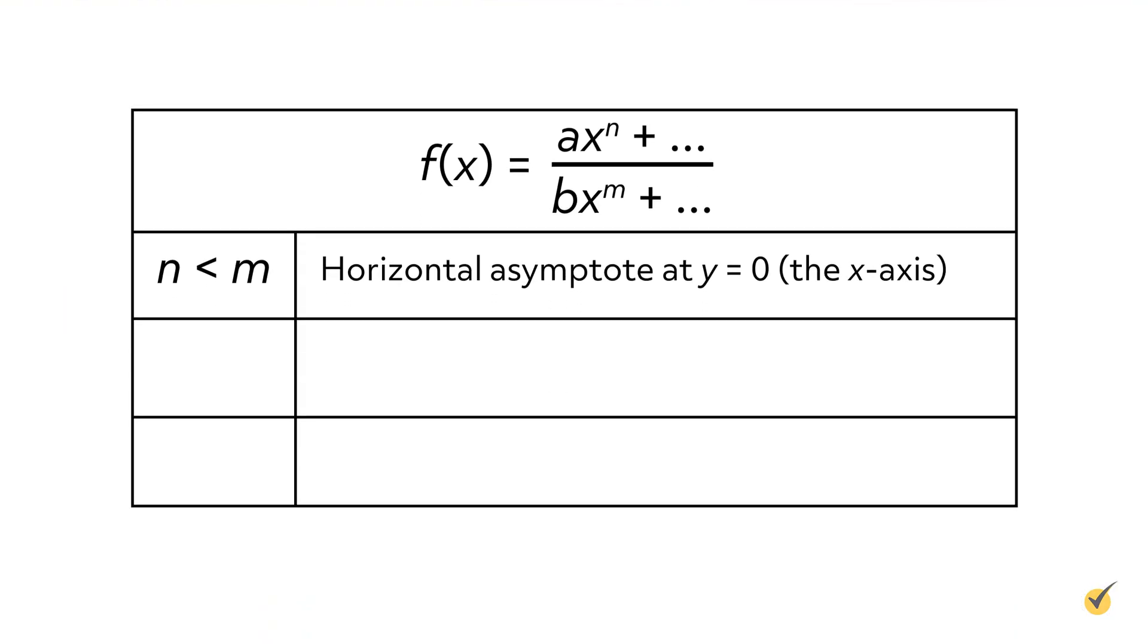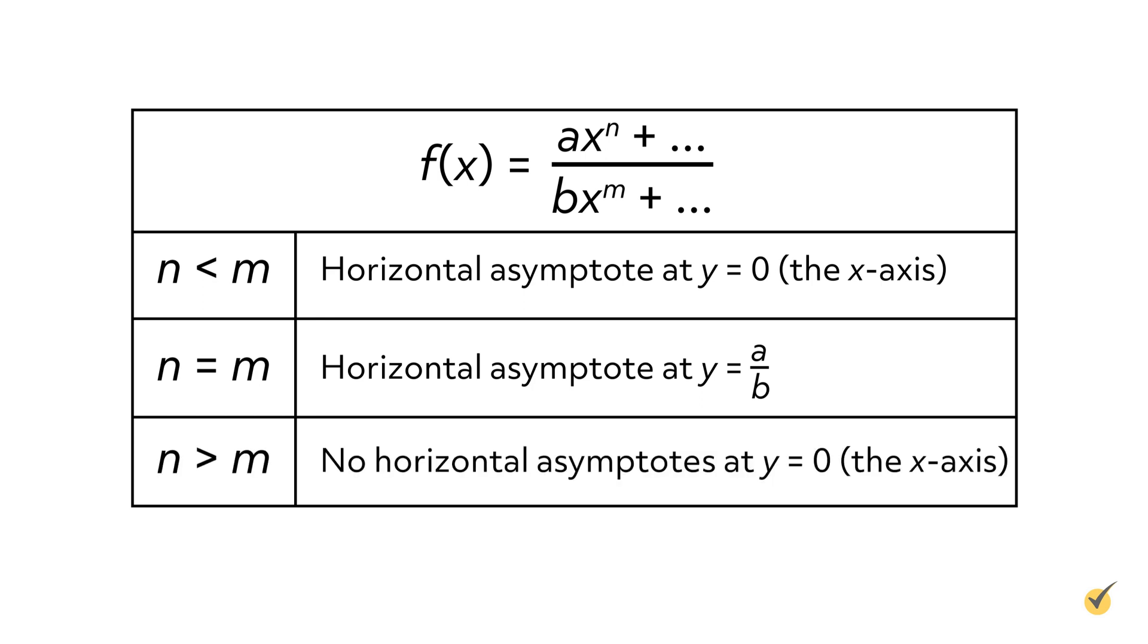If n is less than m, or the highest exponent of the top is smaller than the highest exponent of the bottom, then the function will have a horizontal asymptote at the x-axis, or along y equals 0. If n and m are equal, or in other words, the numerator and denominator share the same highest power of x, then the function will have a horizontal asymptote at the height of the coefficient a divided by coefficient b. If n is greater than m, or the highest power on the top is bigger than the highest power on the bottom, the function will not have any horizontal asymptotes.